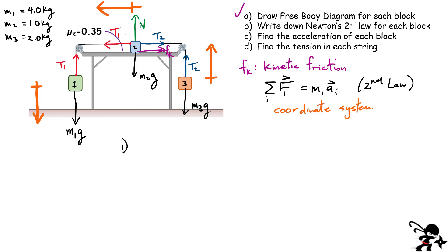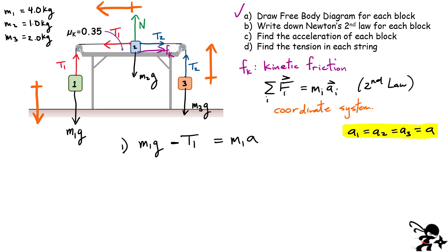For block number one, down is the positive direction. We have the weight acting down, and we have tension T1 acting up, so that's minus T1. That's the two forces acting on this block, equal to M1 times acceleration A. The acceleration of each block is going to be the same — very important. So I only have one acceleration, I don't need a subscript; I simply call them all the same acceleration A.